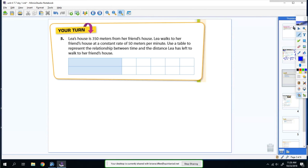Leah's house is 350 meters from her friend's house. Leah walks to her friend's house at a constant rate of 50 meters per minute. Use a table to represent the relationship between time and distance Leah has left to walk to her friend's house.